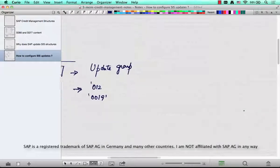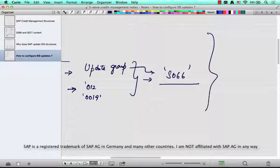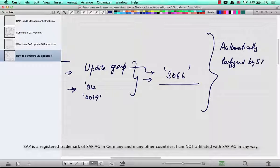This update group is responsible to update the corresponding tables like if you want to update S066 table this update group that's determined based on the combination will determine the right table to update. The best part of this is you don't have to do any of this in any typical project. It's automatically configured by SAP out of the box and you would rarely have to touch it at least in the context of credit management.